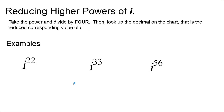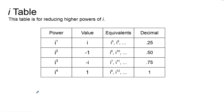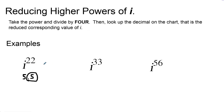To reduce higher powers of i, take the power and divide by four, then look up the decimal on the chart — that gives the reduced corresponding value of i. For example, i to the 22nd power: divide 22 by four and get 5.5. All that matters is the decimal: 0.5. Looking up 0.5 on the chart corresponds to i to the second power. So i to the 22nd is equivalent to i squared, which equals negative one.